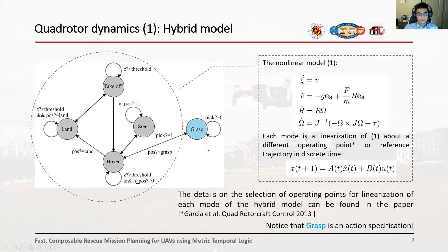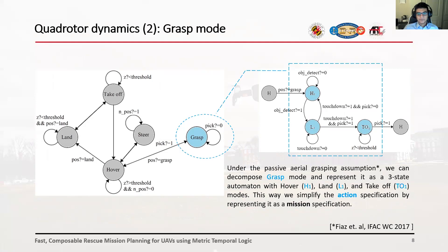Notice that grasp is the only action-specific mode of the system, and it's not straightforward to model it as system dynamics. It turns out that under some assumptions, such as passive variable grasping from our previous work, we can decompose the grasp mode and present it as a three-state automaton with hover, land, and takeoff modes. This way, we can simplify this action specification and represent it as a mission specification, which greatly simplifies the problem since grasping in general is a very challenging problem and hard to model dynamically.